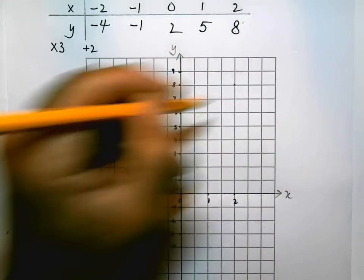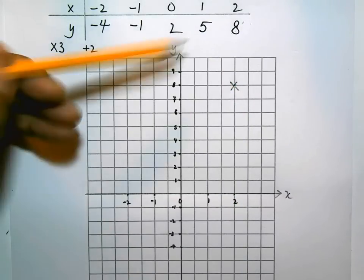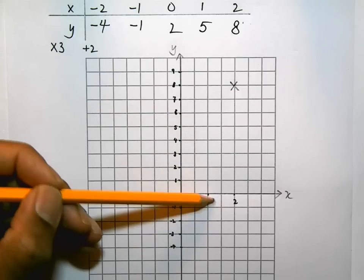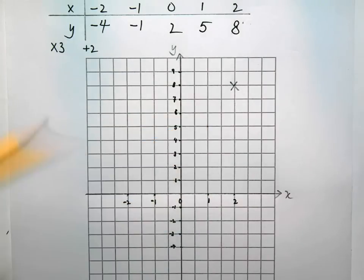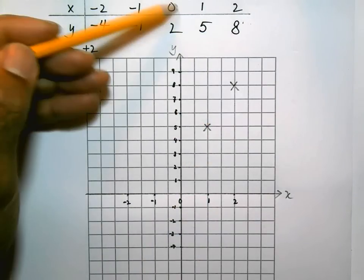Then 1, 5, 1 along and 5 up, and there. Put a clear cross. 0, 2, 0, 2 is there. Put a clear cross.